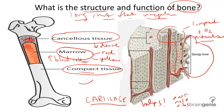So, buildings and bridges have bones to thank for their impeccable design. This lattice structure in bone helps basketball players stress their bodies over and over again without harm. You can learn more about these fascinating structures in other videos.